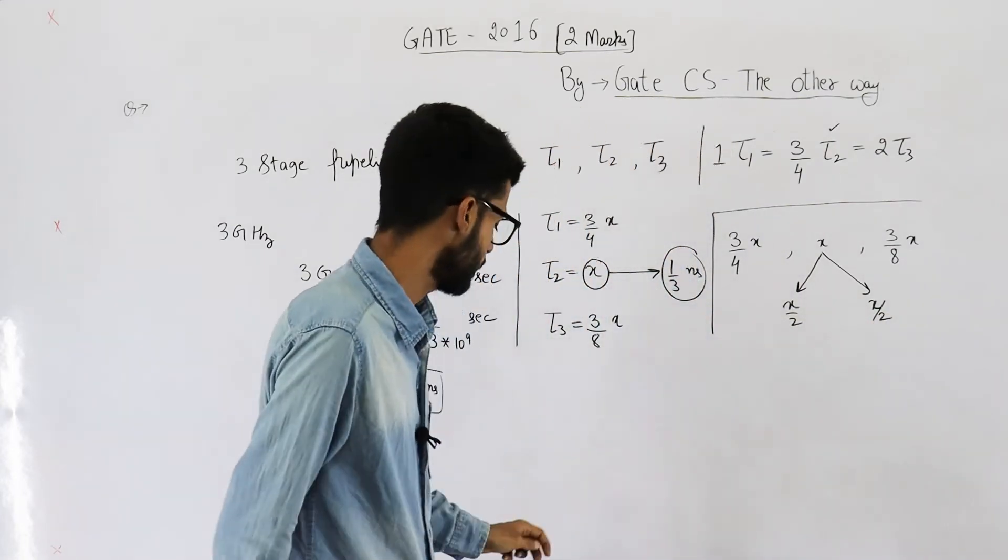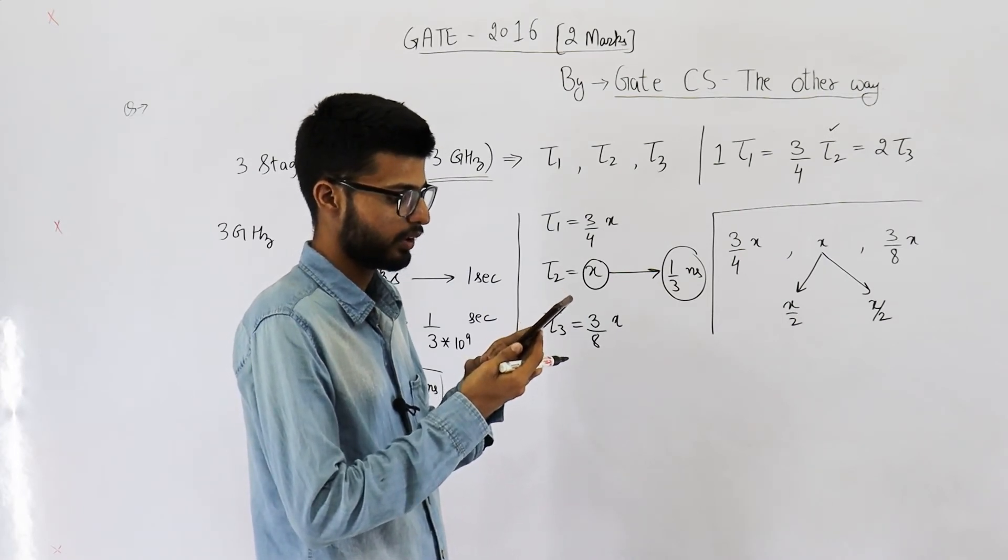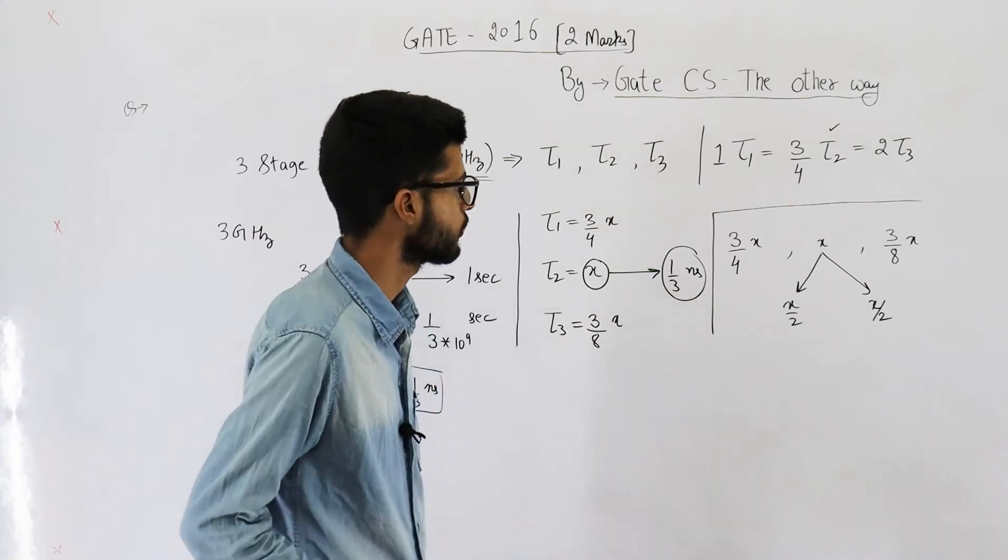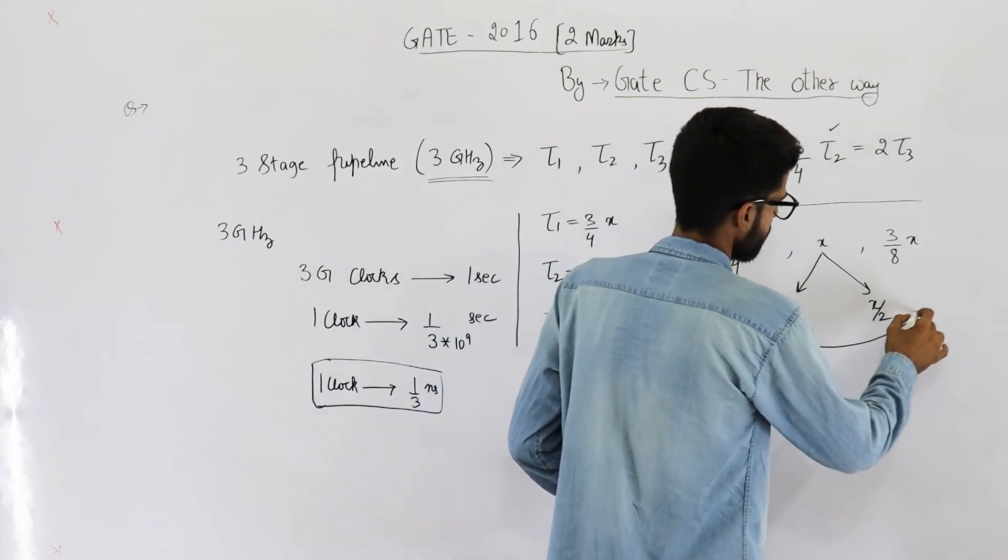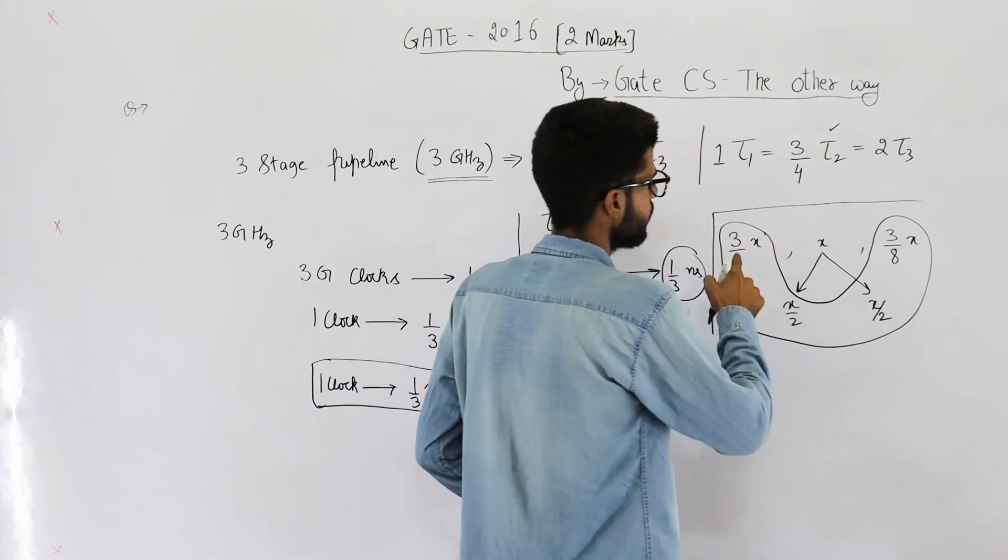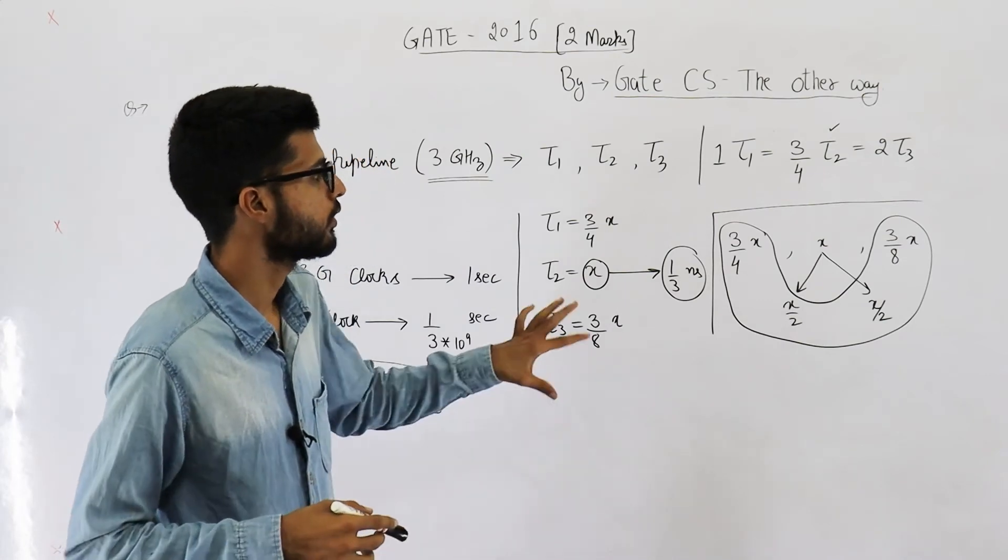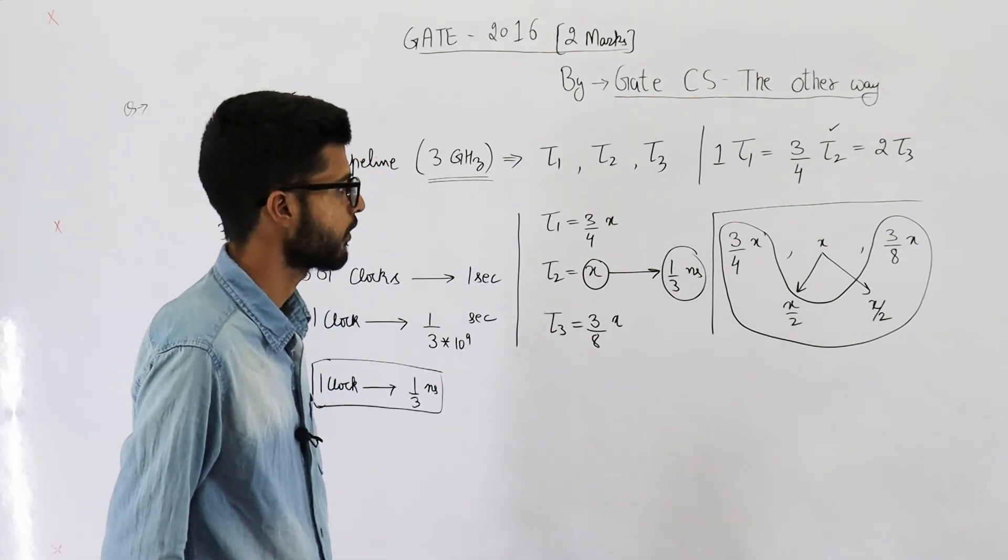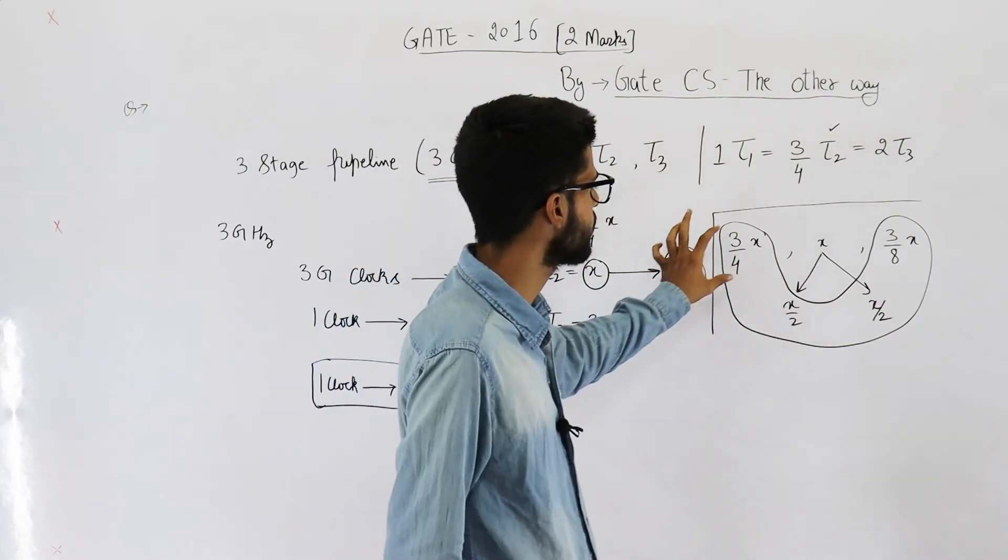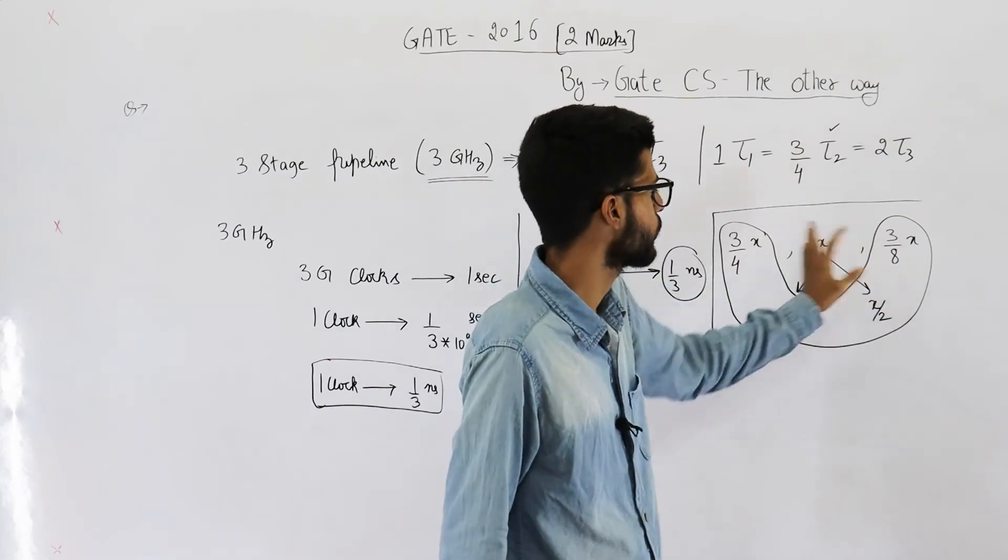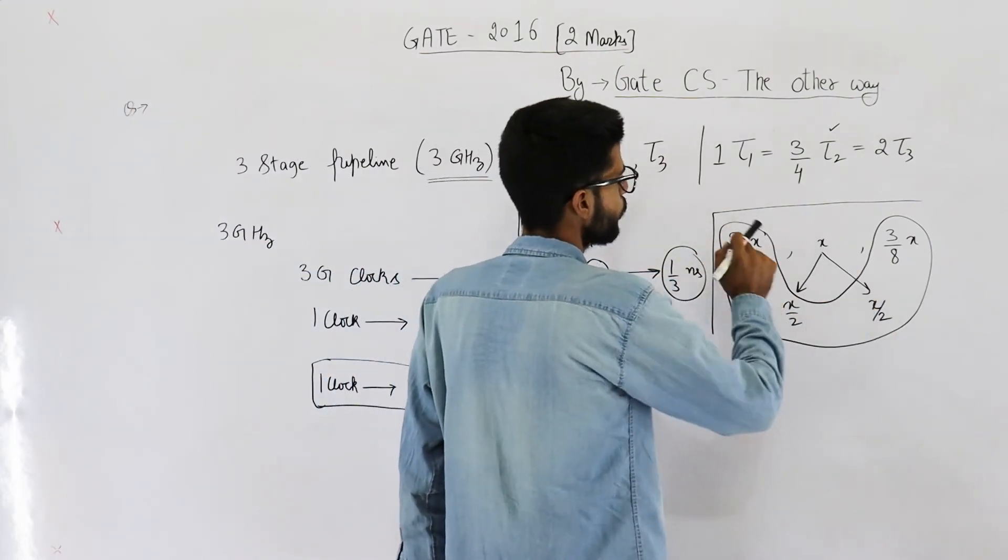And we are required to find out the frequency of new processor. So, the new processor has these stages: 3 by 4x, x by 2, x by 2 and 3 by 8x. Now, you see which one of these is going to be the largest one. 3 by 4x or half x. Obviously, 3 by 4x is largest one. Similarly, out of these two also, 3 by 4x is largest one. So, the stage with the largest delay here is 3 by 4x.